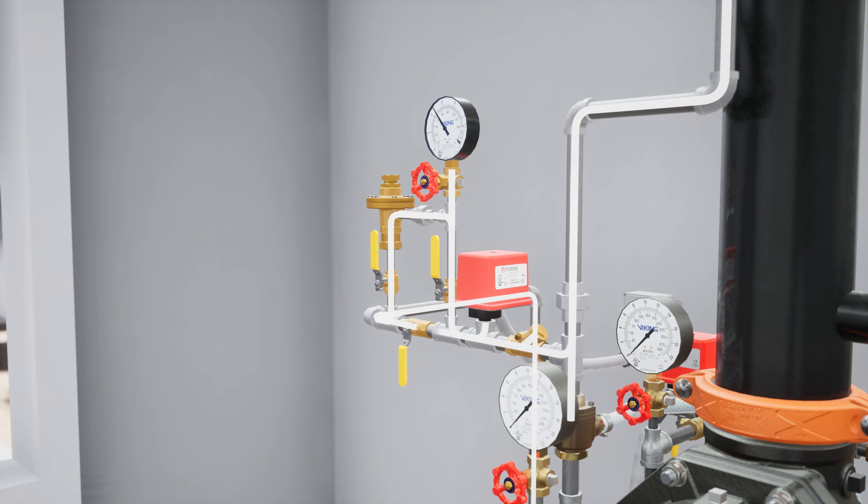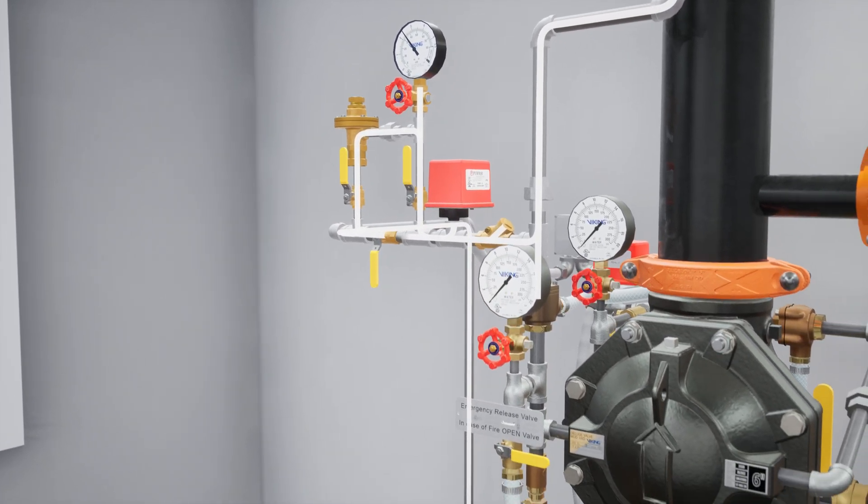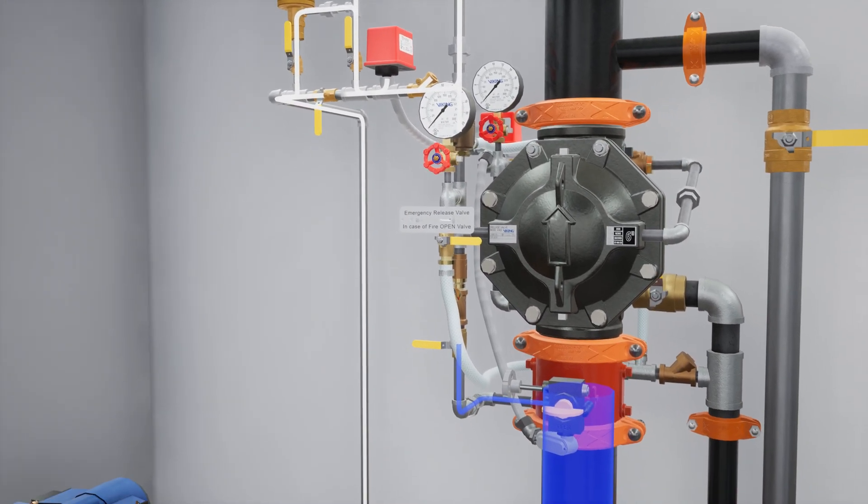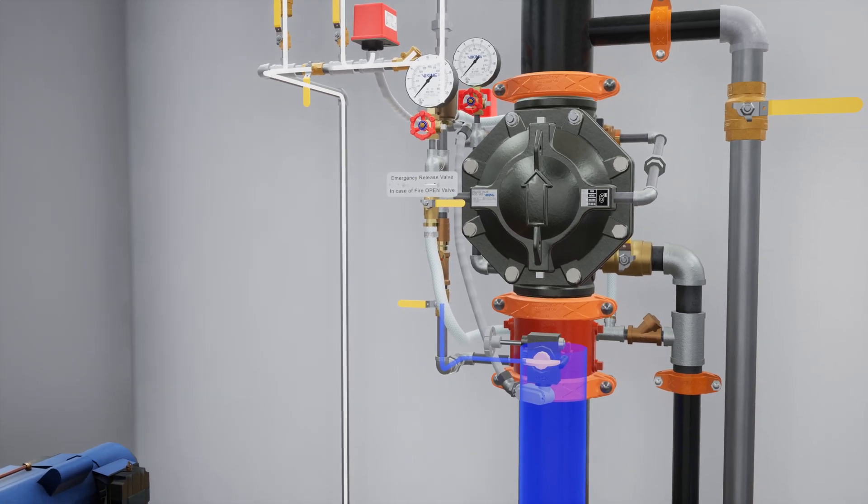After establishing air pressure in the release system, the pneumatic actuator will close. Open the priming valve to establish water pressure in the prime chamber.